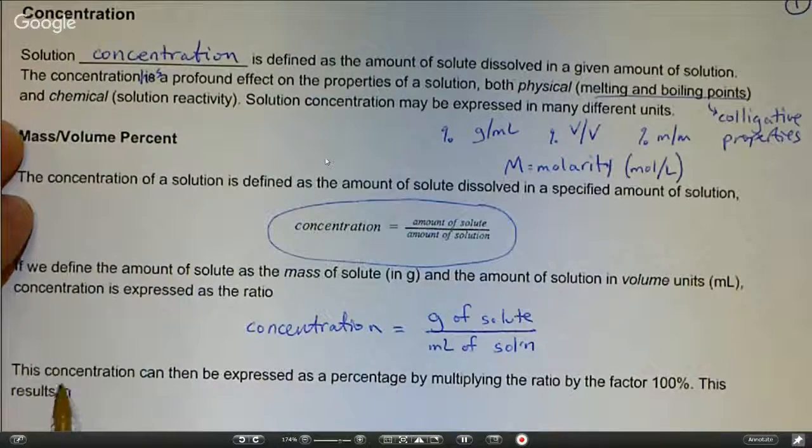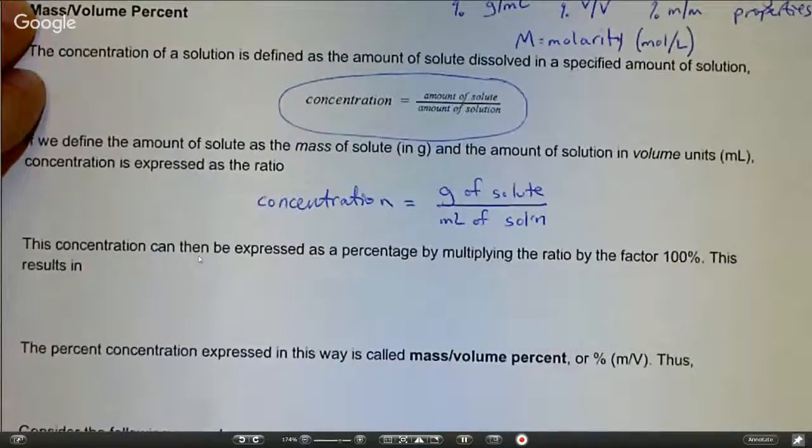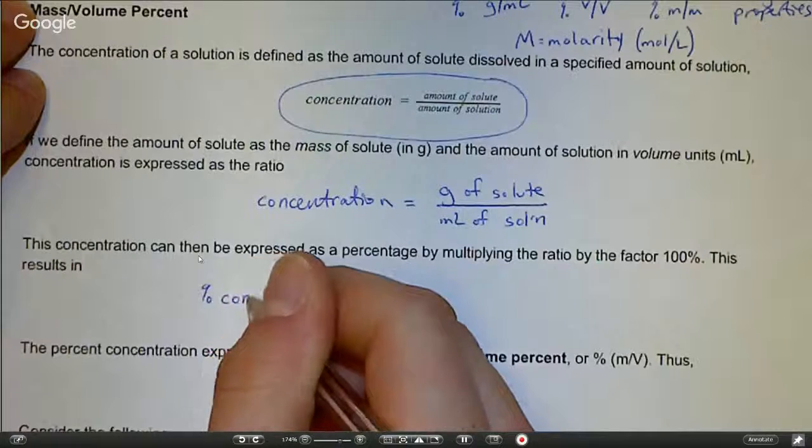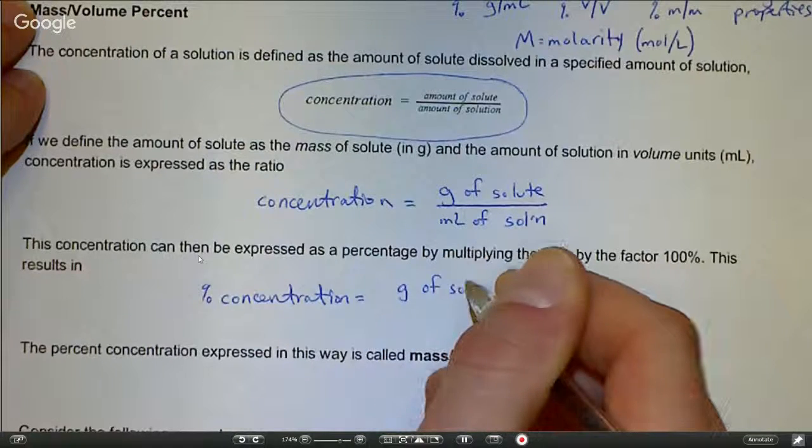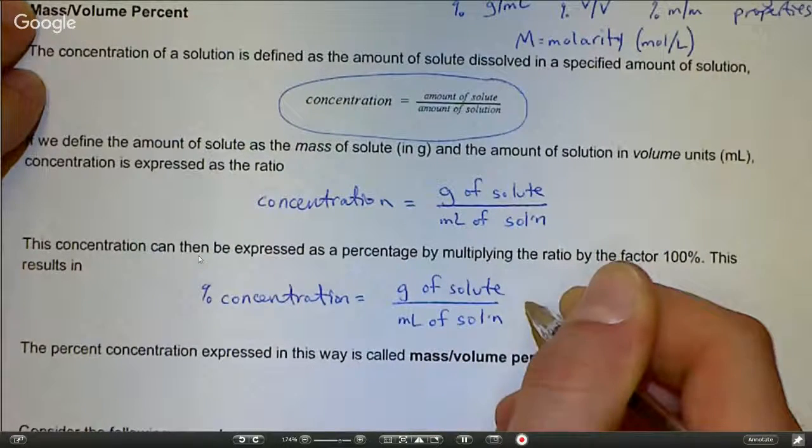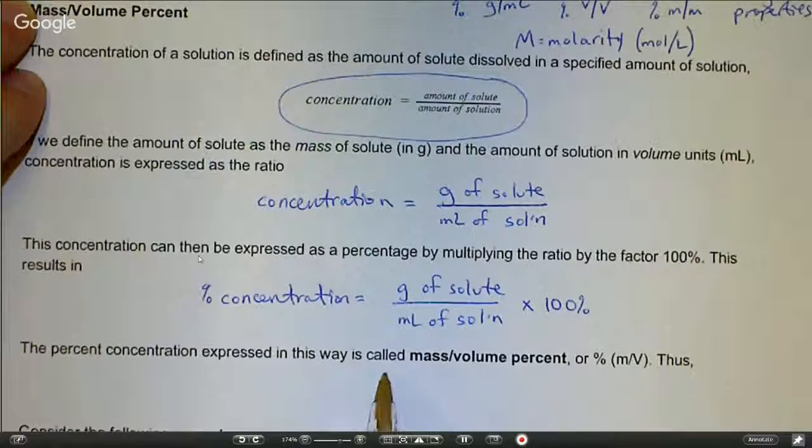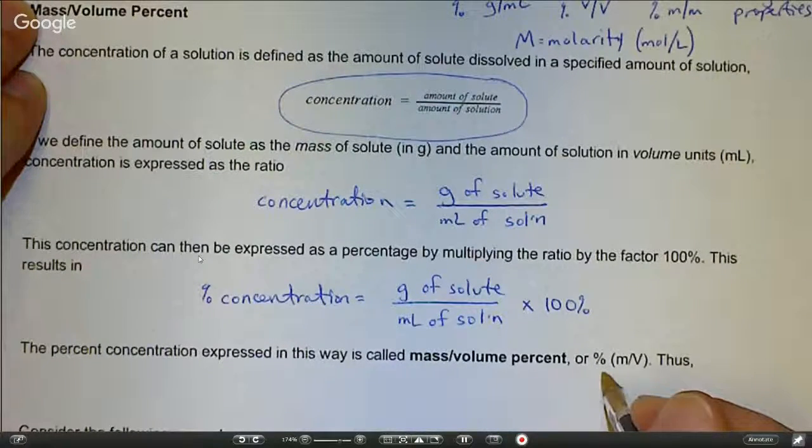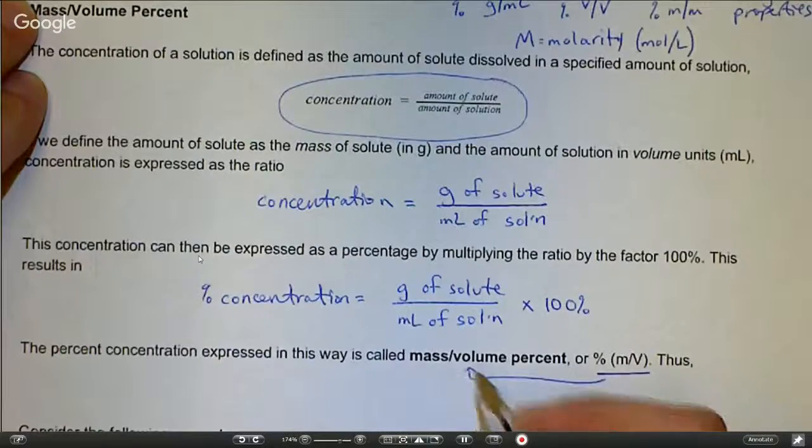This concentration can then be expressed as a percentage by multiplying the ratio above by the factor 100%. Percent concentration equals the grams of solute over the milliliters of solution times 100%. We call this mass volume percent or percent m/v or m over v.